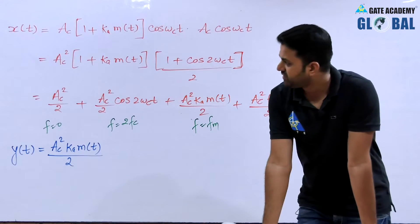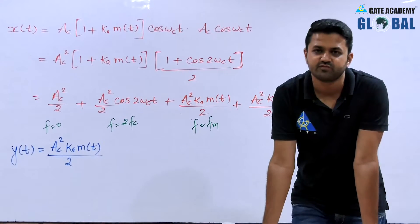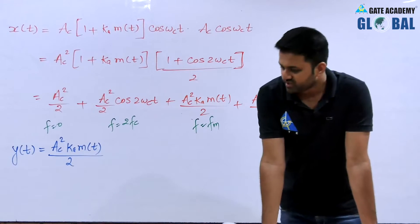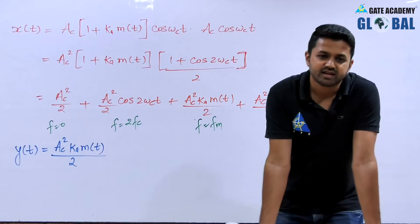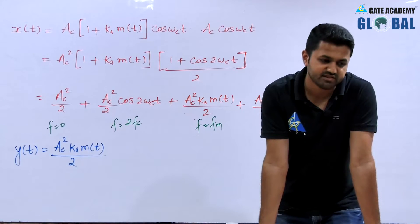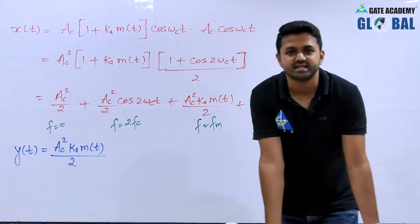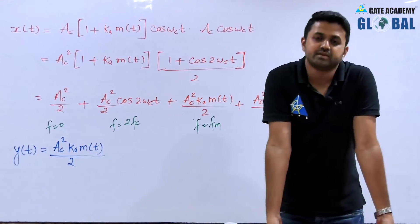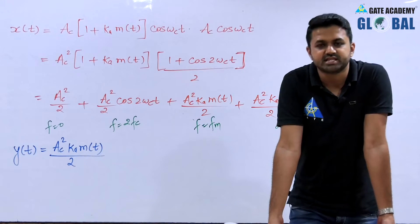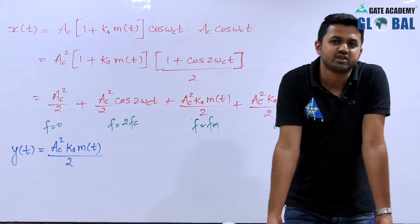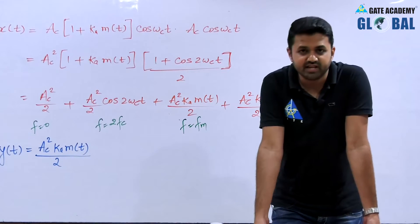We have now studied four methods: first, the square law demodulator; second, the rectifier detector; third, the envelope detector; and fourth, the synchronous detector or coherent detector. The synchronous detector is very difficult to design because we have to synchronize the carrier with that of the transmitted carrier. However, it works very well and can be considered for point-to-point communication, where there is one transmitter and only one receiver.